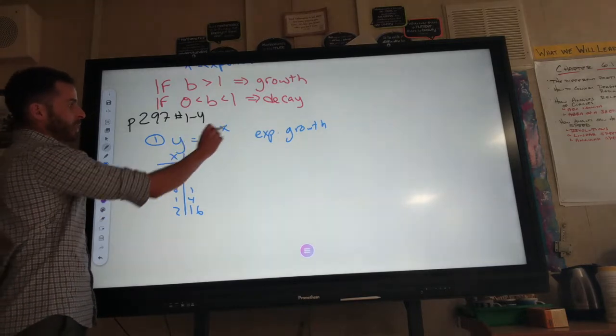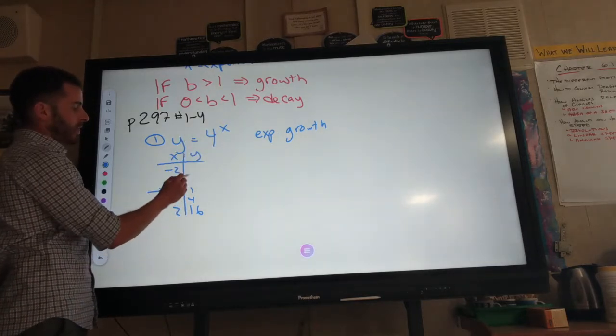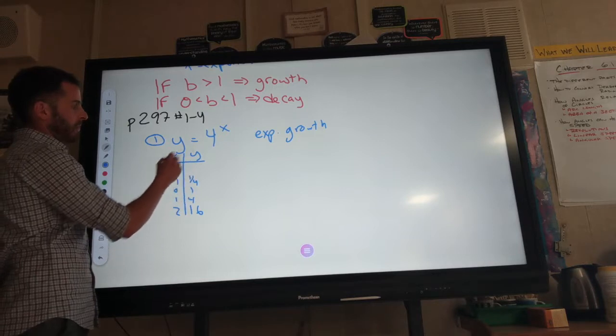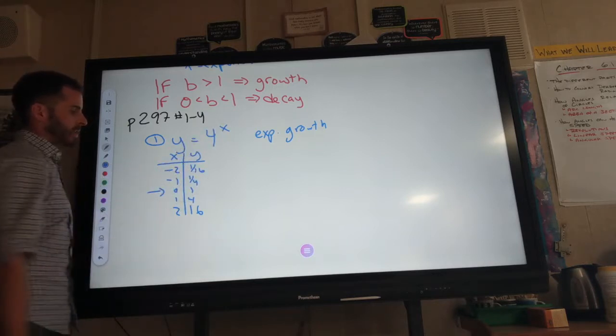Negative exponents: 4 to the negative 1 is 1 over 4, and 4 to the negative 2 is 1 over 16.